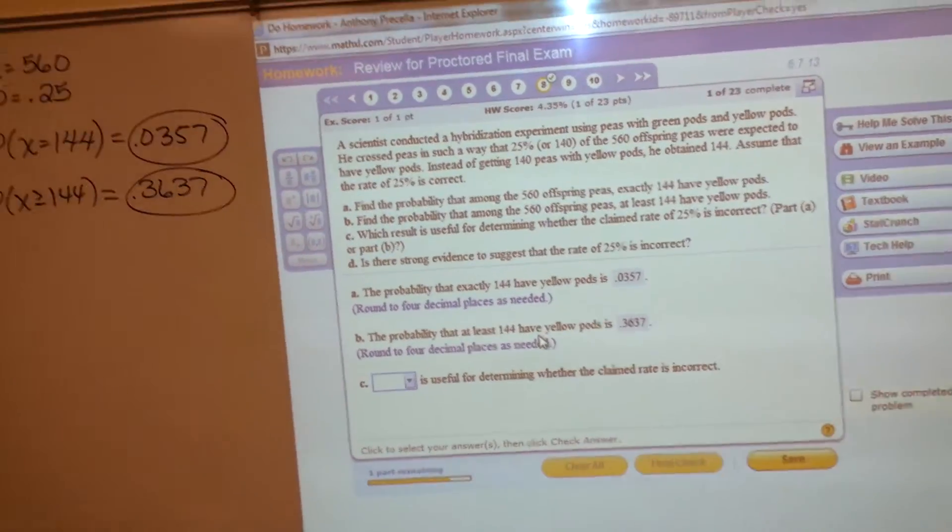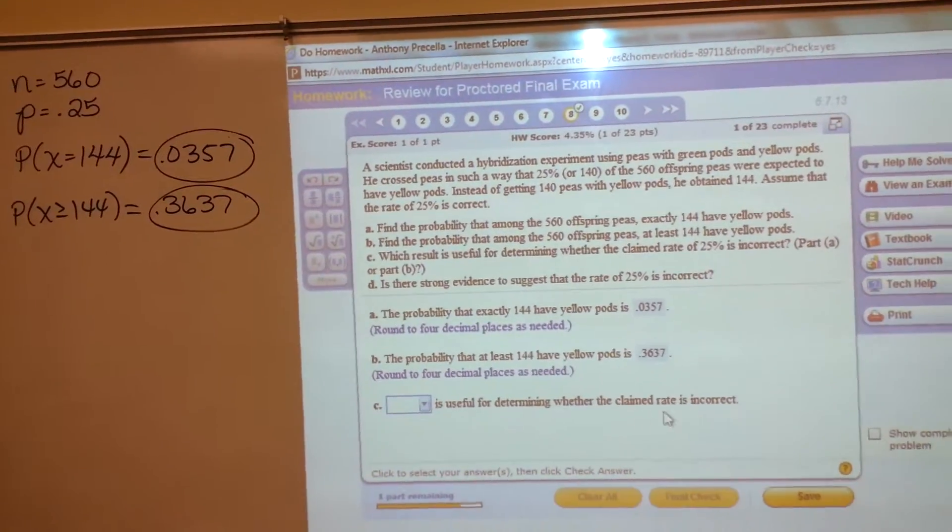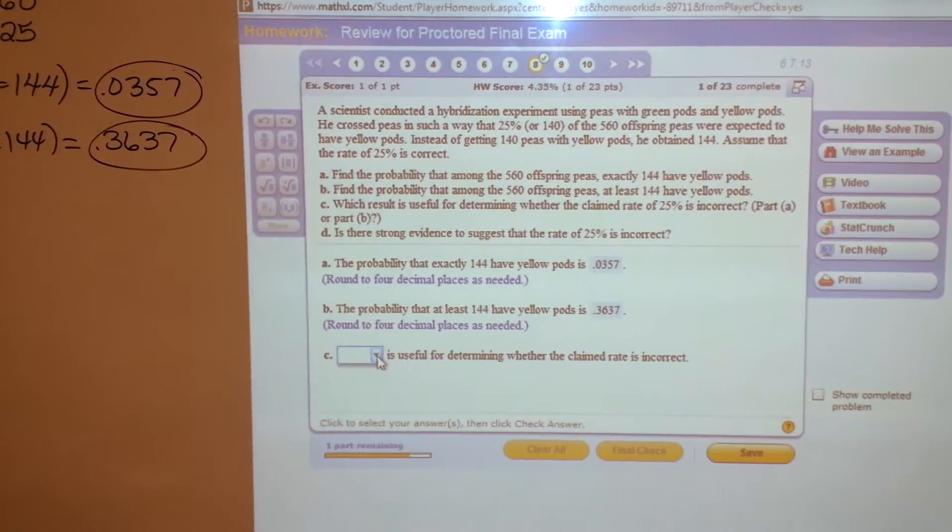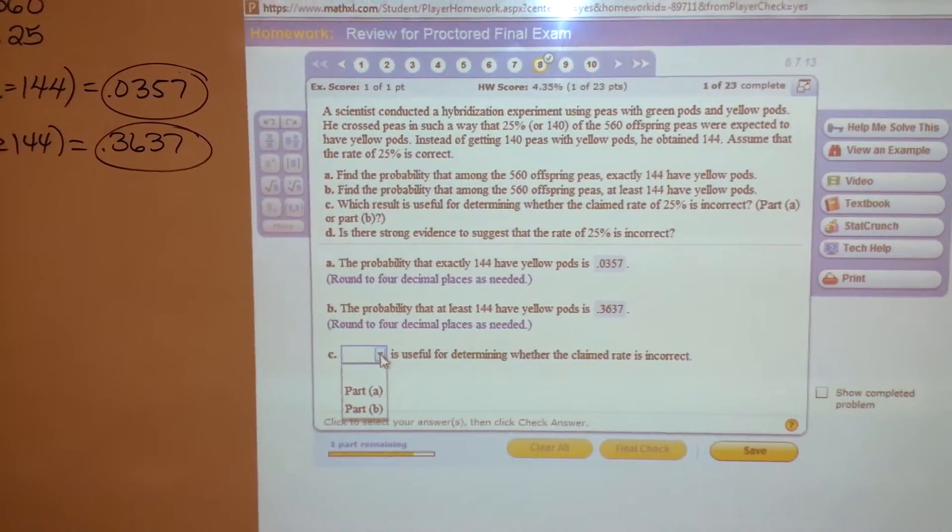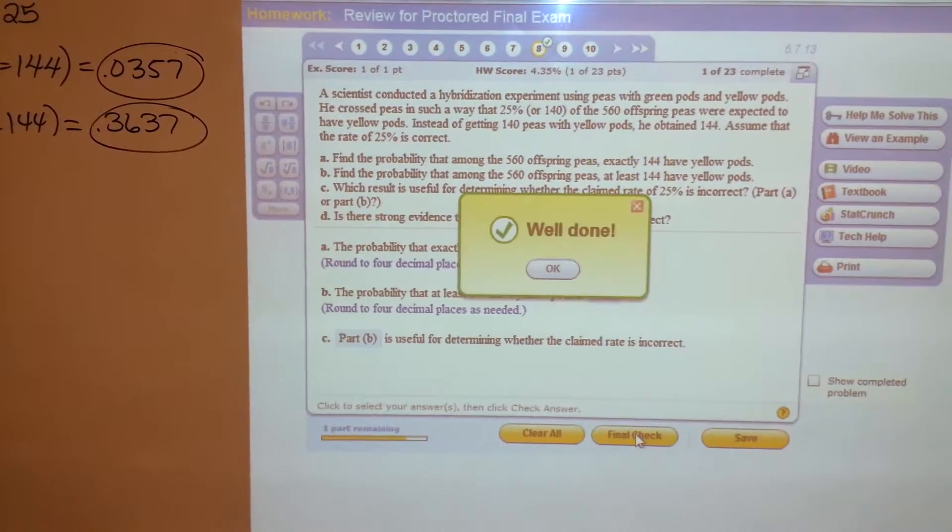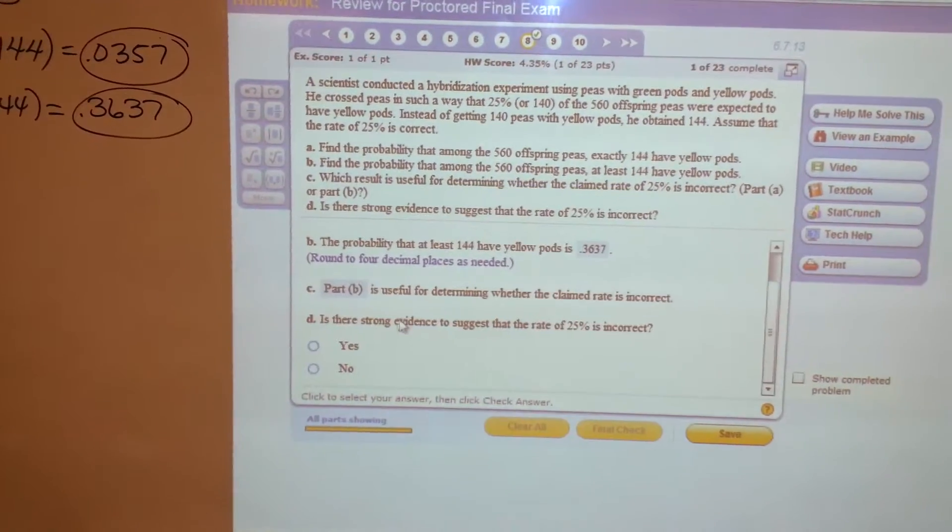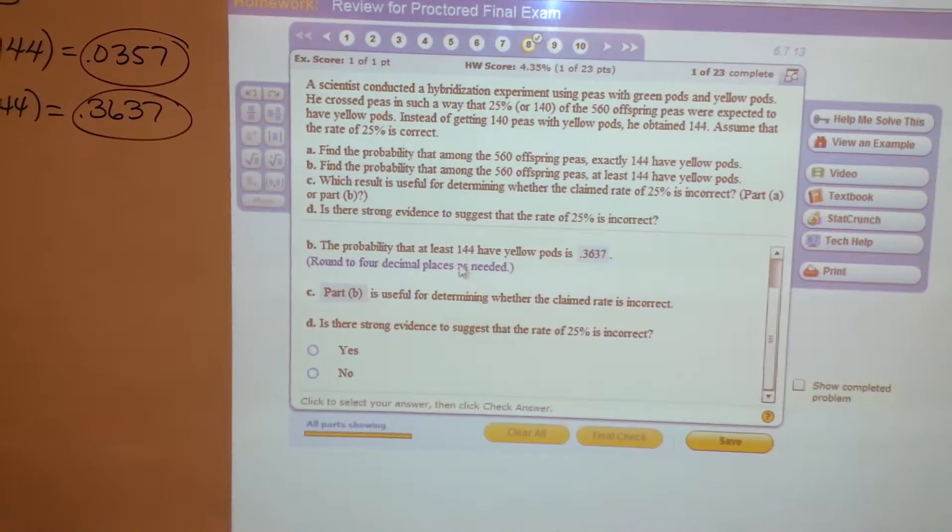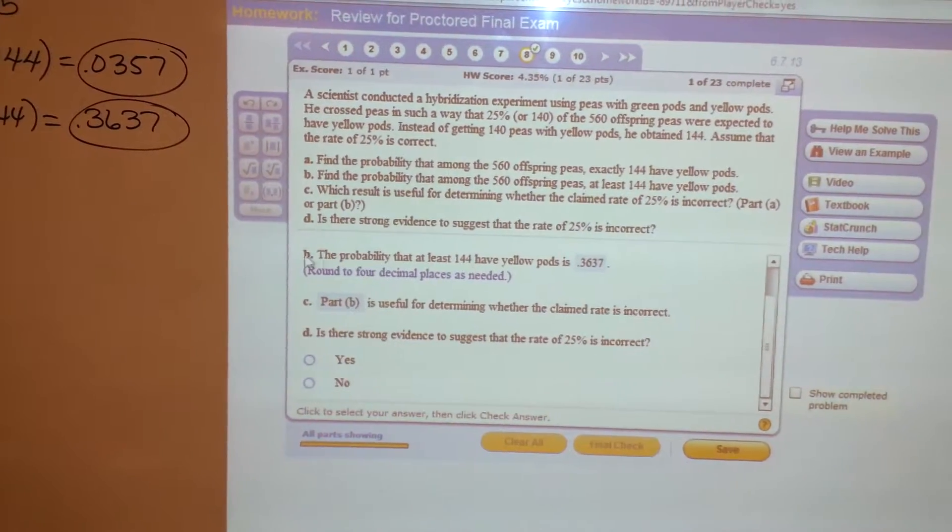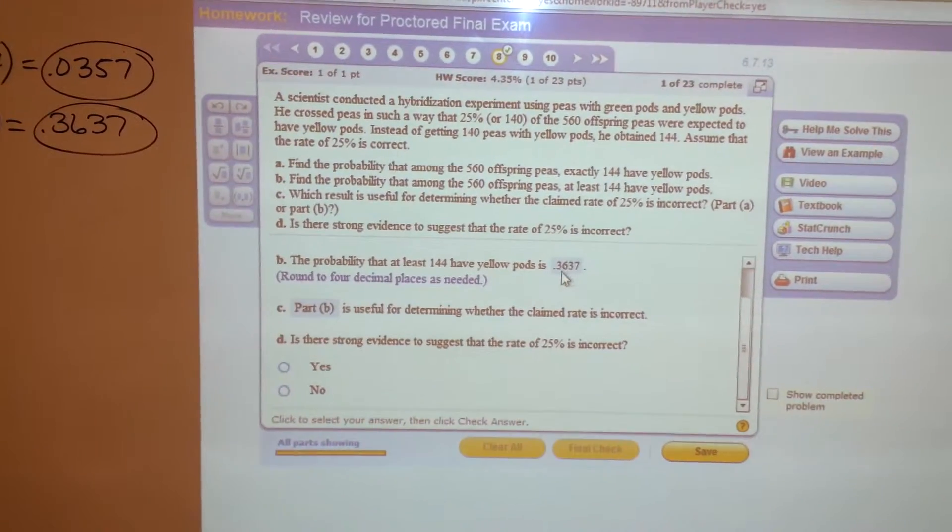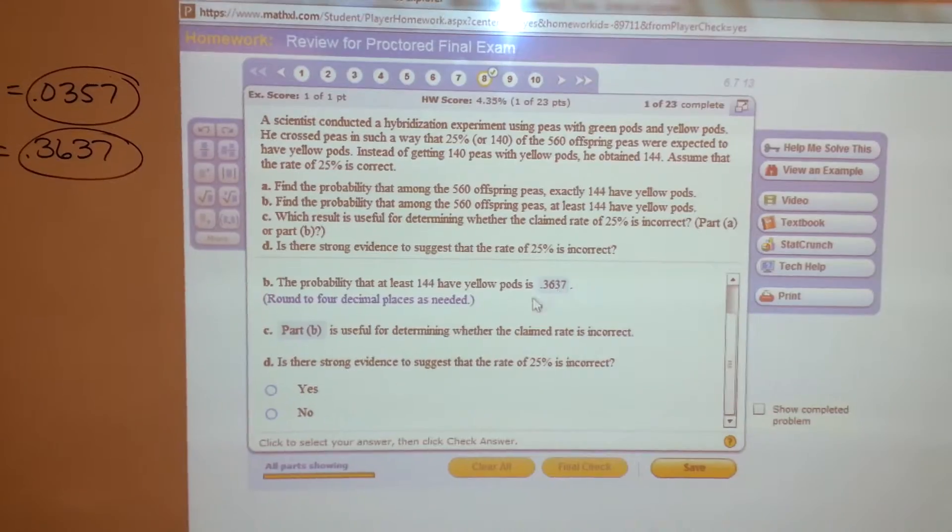Now, which one of these is more useful in determining if the claim rate is incorrect? Well, that would be the 144 or more. So part B. And is there strong evidence to suggest that 0.25 is incorrect? Well, the answer to B is not less than 5%. It's a pretty good amount.